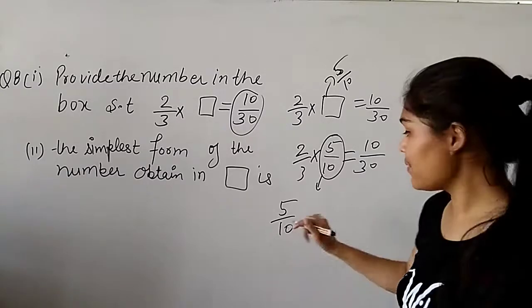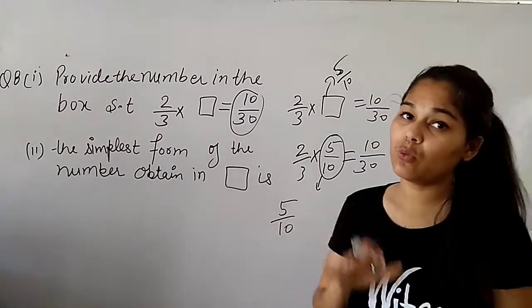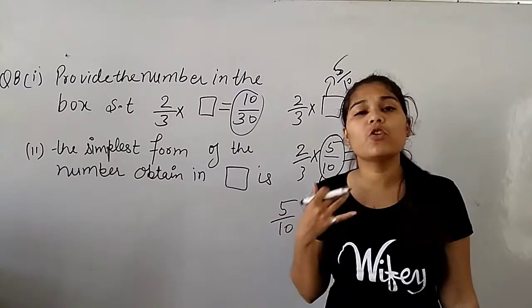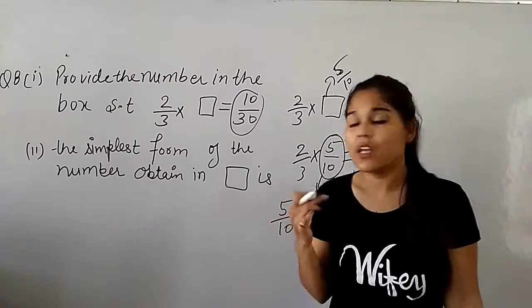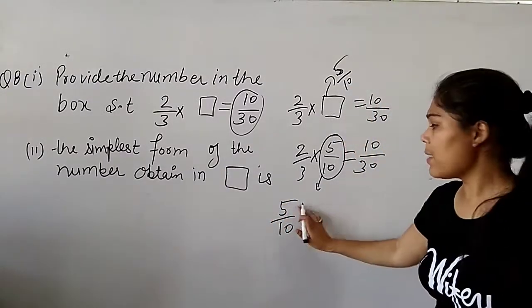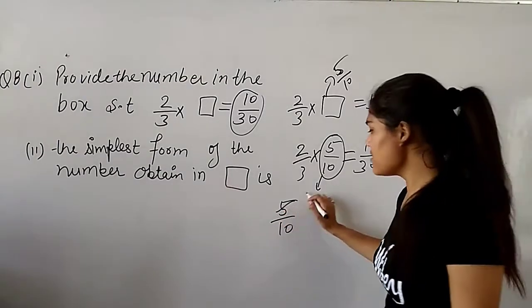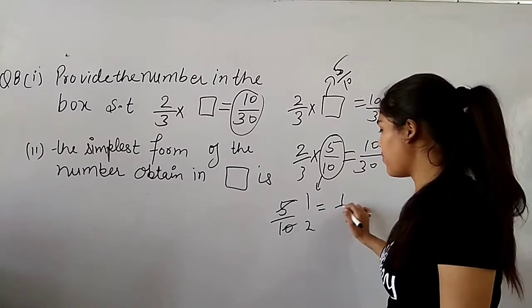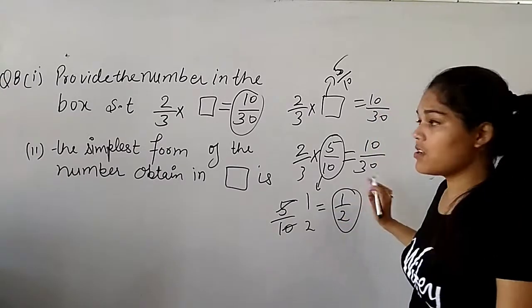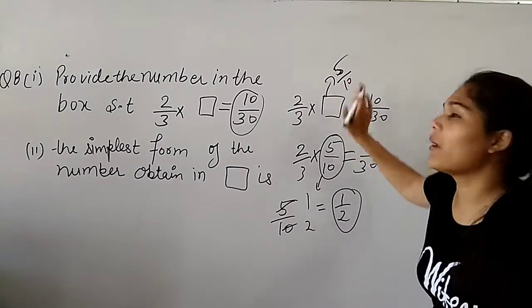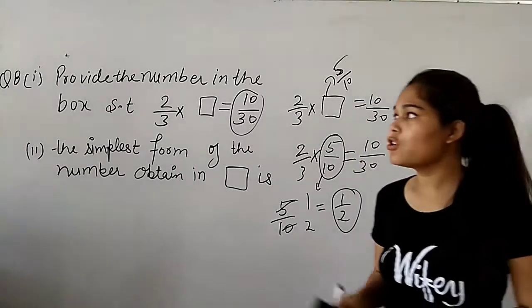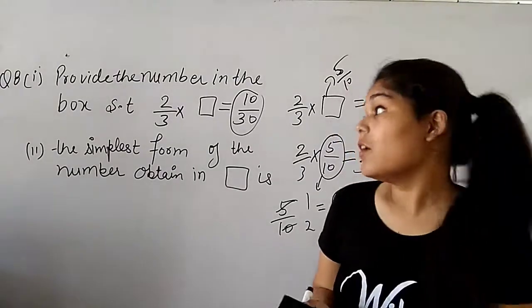The simplest form means it can't be cut further. So, if it is not cut, then the simplest form will be used. This is your simplest form of the 5 by 10.